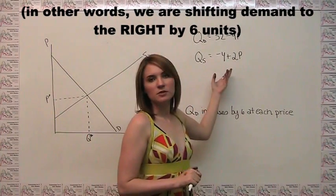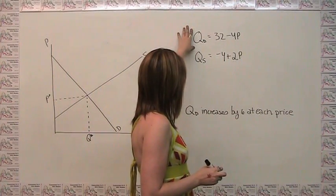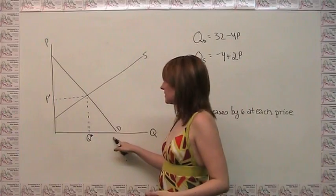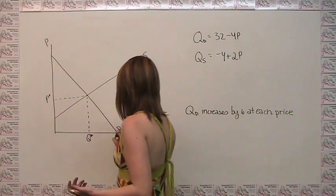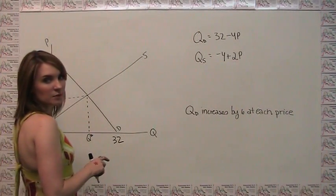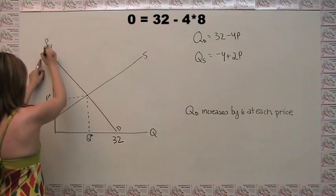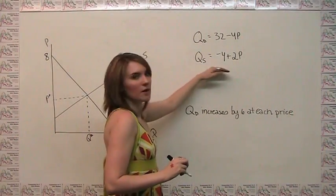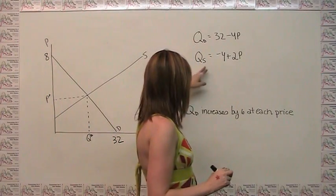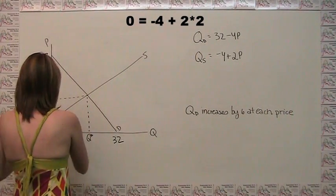The first thing we want to do is figure out where the original equilibrium is. If this demand curve is 32 minus 4p, then the intercept on the q-axis is where p equals 0, which is 32, and the intercept on the p-axis is where q equals 0. So if 0 equals 32 minus 4p, that happens when the price is equal to 8. Similarly, the supply curve starts where quantity supplied is exactly 0. So if 0 equals negative 4 plus 2p, that happens when p equals 2.